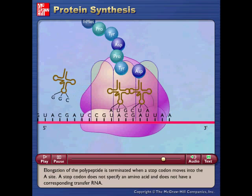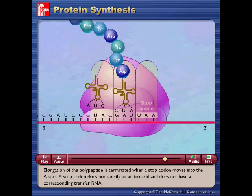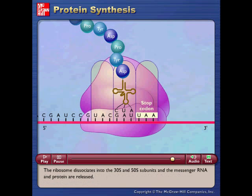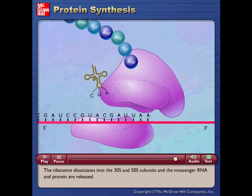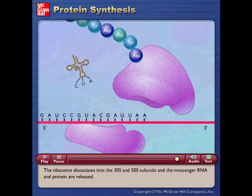Elongation of the polypeptide is terminated when a stop codon moves into the A-site. A stop codon does not specify an amino acid and does not have a corresponding transfer RNA. The ribosome dissociates into the 30S and 50S subunits, and the messenger RNA and protein are released.